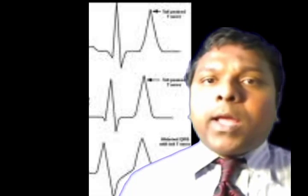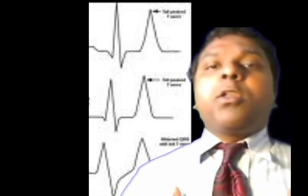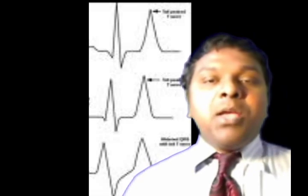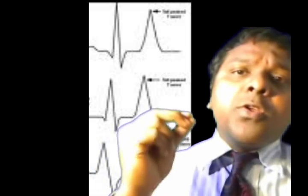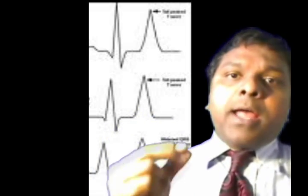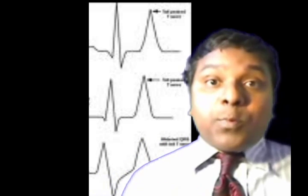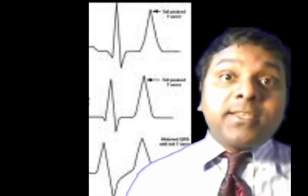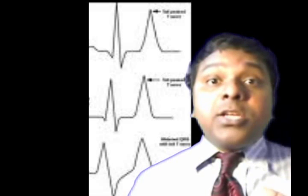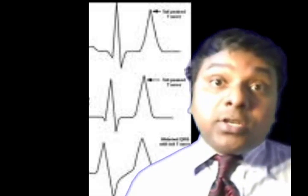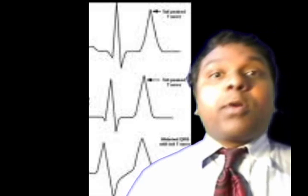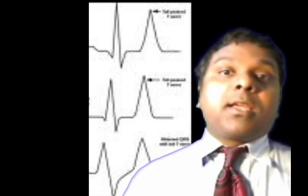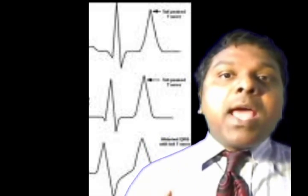Go by the potassium level. If it is more than six milliequivalents per liter, initiate emergency treatment. The most important principle in treating hyperkalemia is to protect the heart by stabilizing the membrane potential. The two strategies are: shift potassium intracellularly, or excrete it from the body. In DKA, treating the underlying acidosis itself corrects the hyperkalemia since potassium shifted out of cells due to the acidotic state.